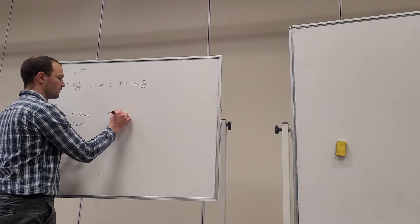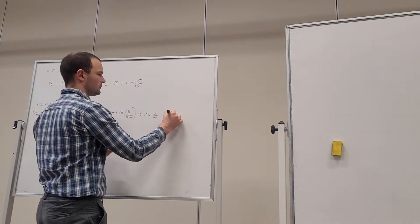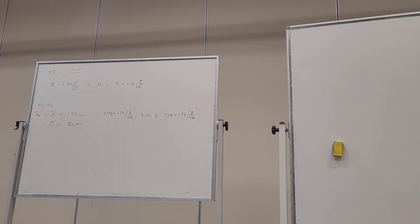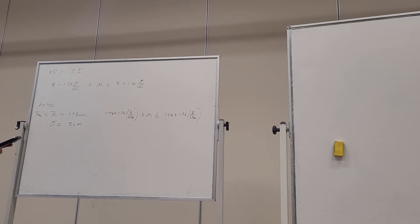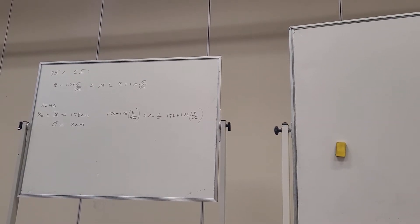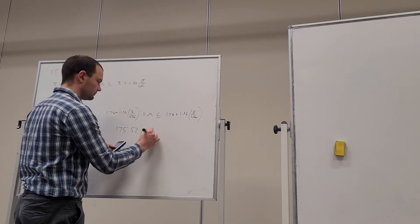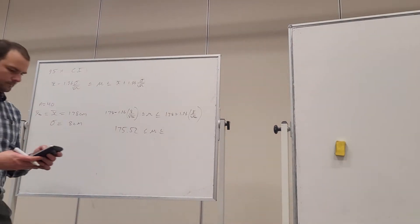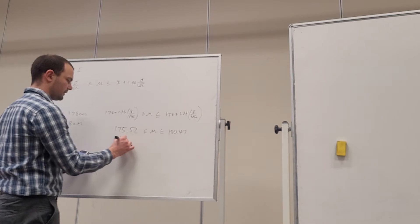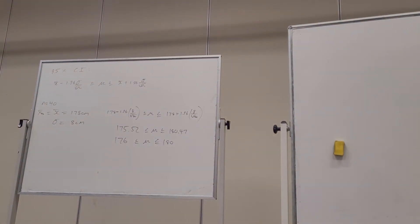So using all that information, let's plug it into the formula. We're going to have 178 take 1.96 times 8 on the square root of 40 is less than the mean, less than 178 plus 1.96 times 8 on the square root of N. Let's evaluate that. 1.96 times 8 on the square root of 40, we've got 175.52. And for the upper boundary, 180.47. And we'll round to three significant figures. That's going to be 176 and this will be 180.